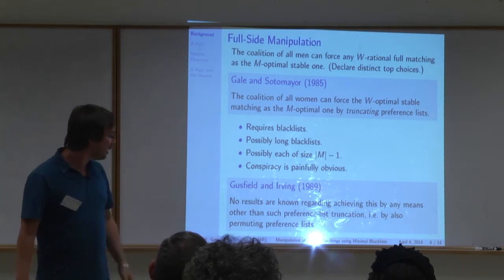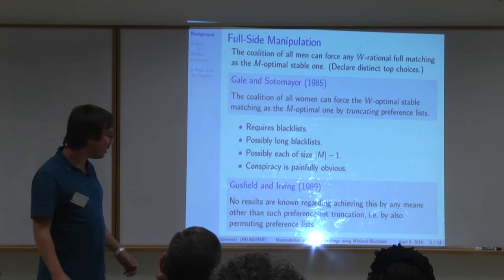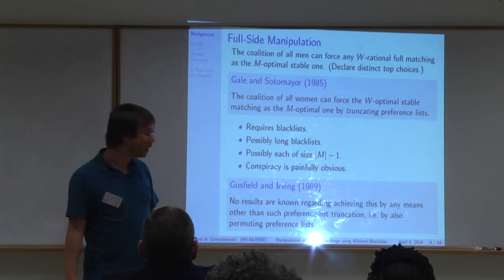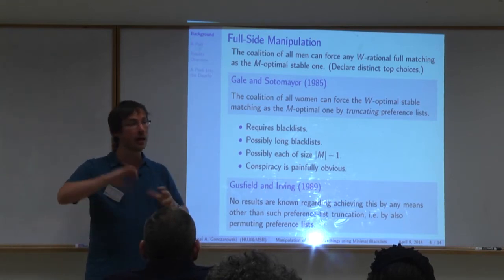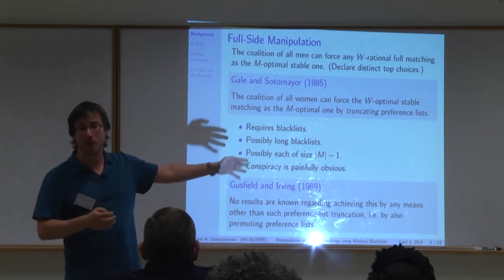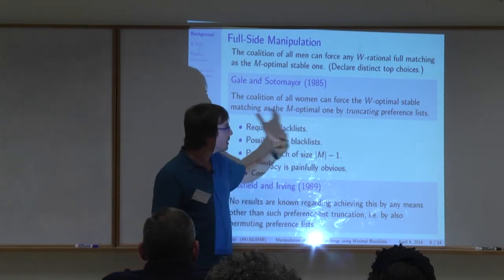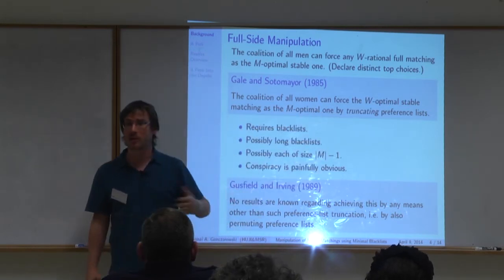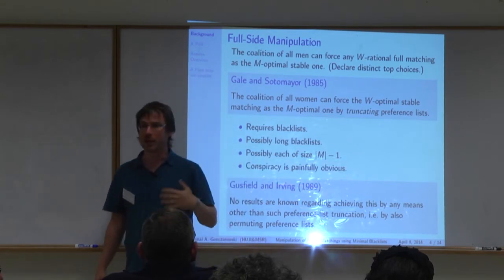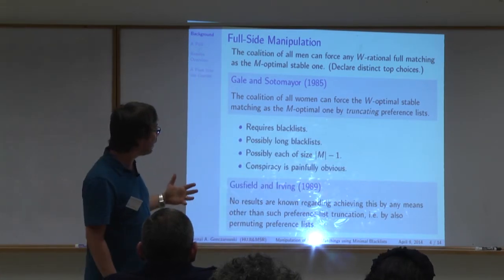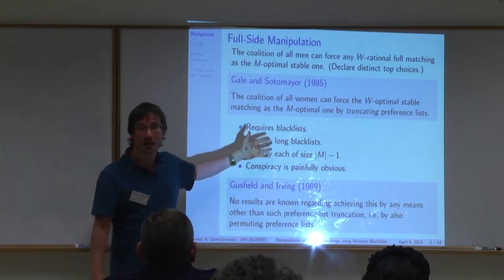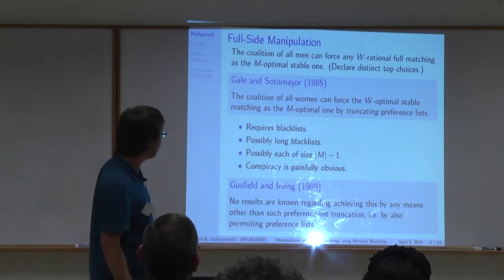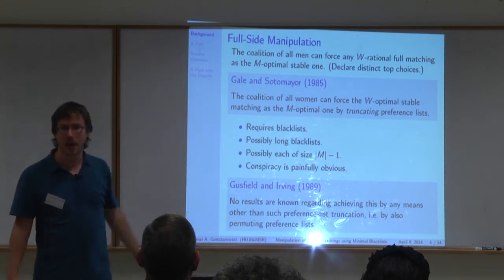Gustville and Irving in 1989 already noted in their book that no results were known regarding achieving this by any means other than truncation — such as permuting preference lists, truncating and permuting, or permuting and throwing some people into the blacklist. Truncating has been studied a lot, and if you ignore sizes of blacklists it gives a best response in many cases. But if sizes of blacklists matter — how obvious the manipulation is, or if blacklists are restricted — Gustville and Irving felt something had to be improved.